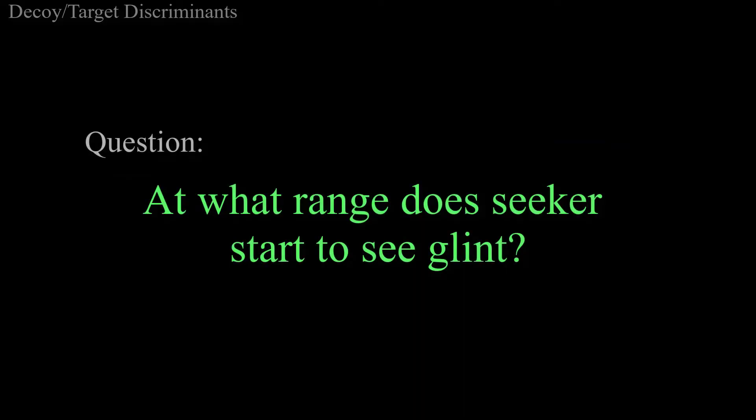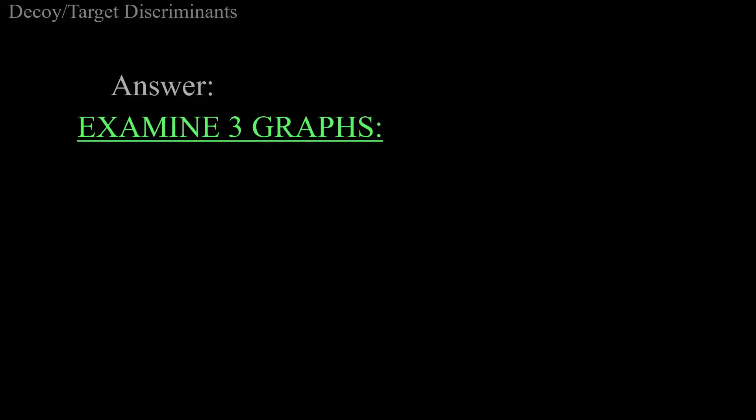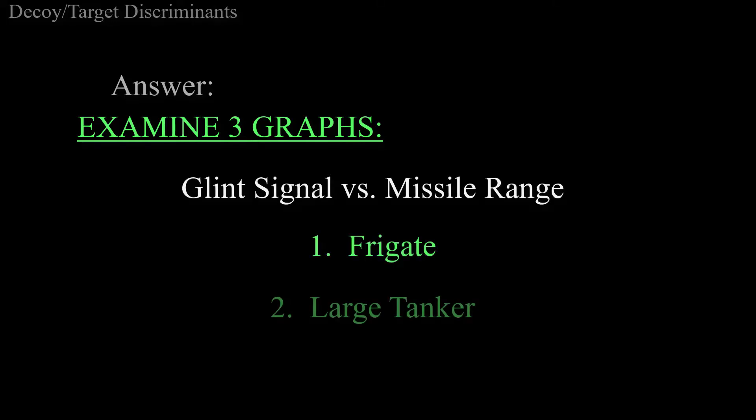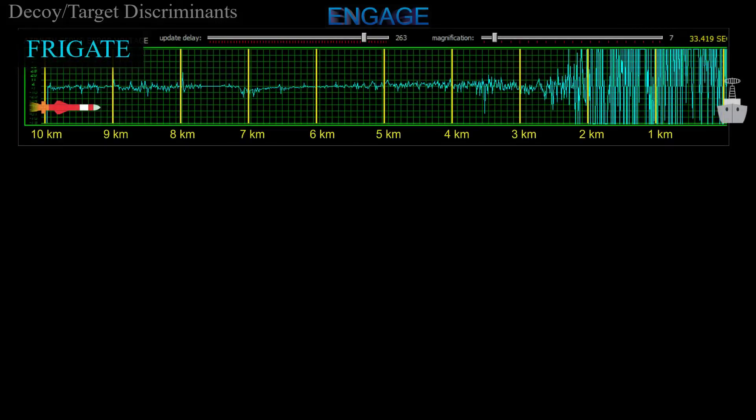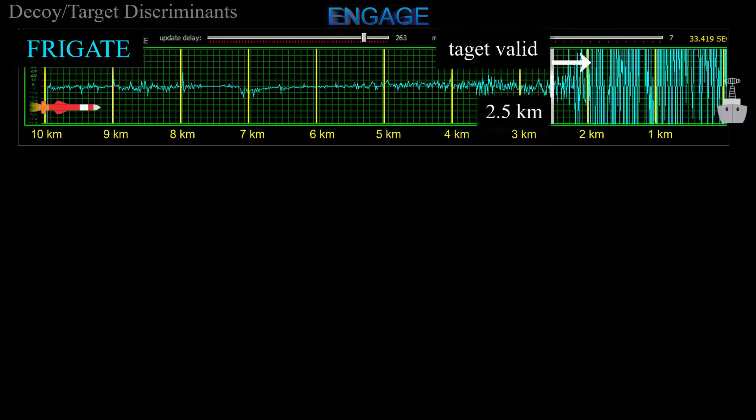From the simulations I've done, I don't expect glint as a target discriminant to work at ranges greater than about four or five kilometers, depending on the size of the ship and its orientation. But it's definitely a factor at closer ranges, where the guidance information really counts.